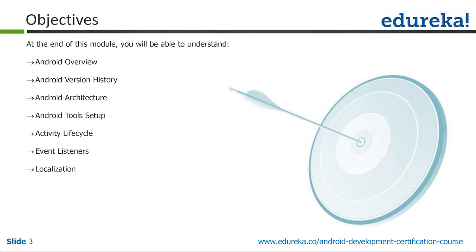After the Android tool setup, we will look at the activity lifecycle. Each screen you see inside your application on the Android platform is called an activity. For example, in a simple chat application you would have a login screen and a chat screen — that gives us two activities: the login activity and the chat activity.